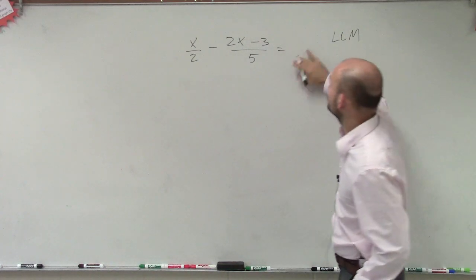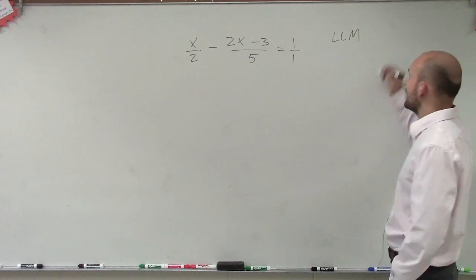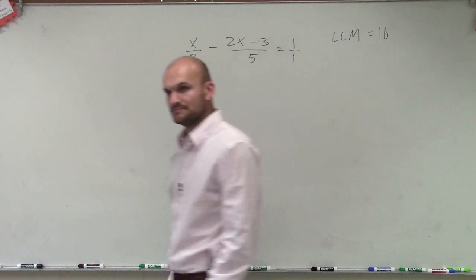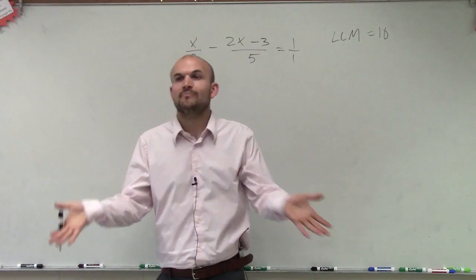First of all, I can rewrite this as a fraction. Therefore, I can say the LCM of my denominators is going to be equal to 10. That's the smallest number that all three of these denominators divide into.